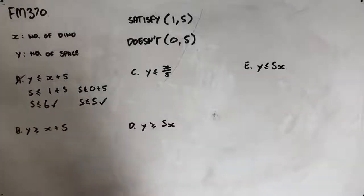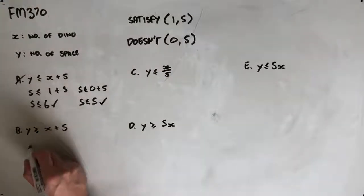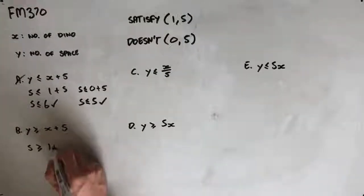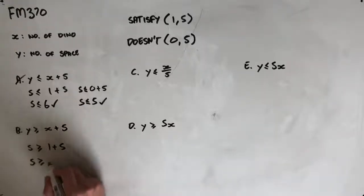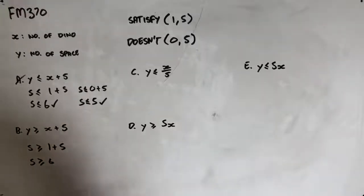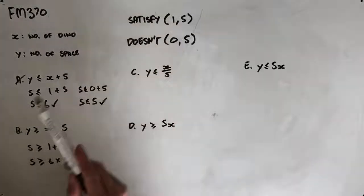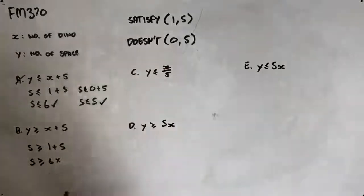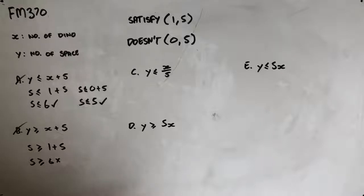Moving on to option B, inserting our one and five, we get that five is greater than or equal to six, which does not satisfy the conditions. These conditions don't satisfy this inequality when they should. So B is also not our correct answer.